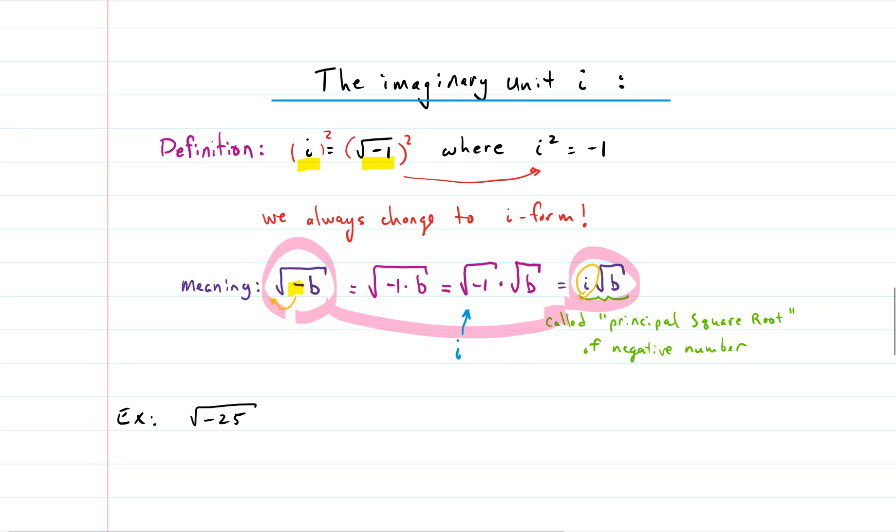So the negative comes out as an i and then you can perform the square root just as you normally would. So let's do this example here: the square root of negative 25. The negative here comes out as an i.